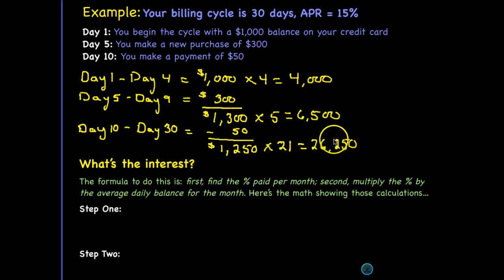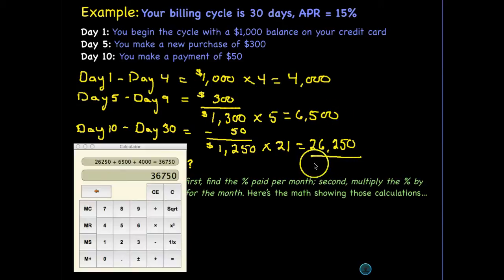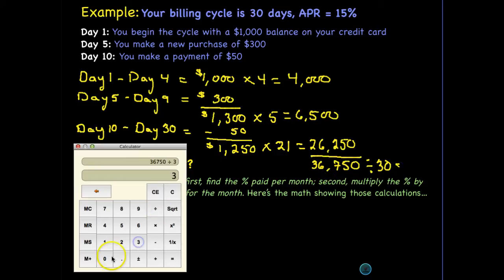Let's think about what we've done. We've taken the amount owed each day for all 30 days: four days at $1,000, five days at $1,300, and 21 days at $1,250. Now we add them up to get our total: $4,000 + $6,500 + $26,250 = $36,750. To find the weighted average, we divide by the number of days in the billing cycle — dividing $36,750 by 30 gives us $1,225. That is our average daily balance.